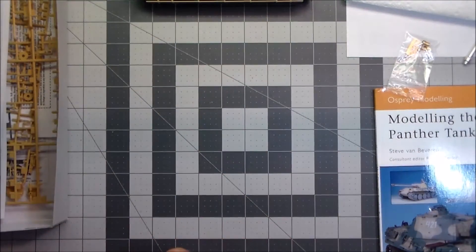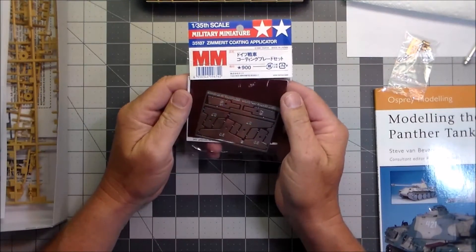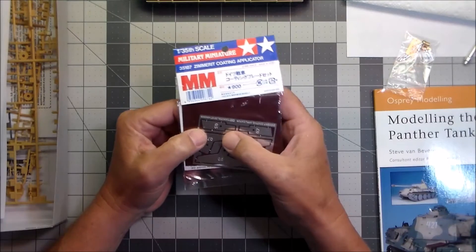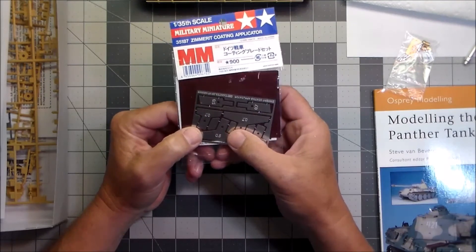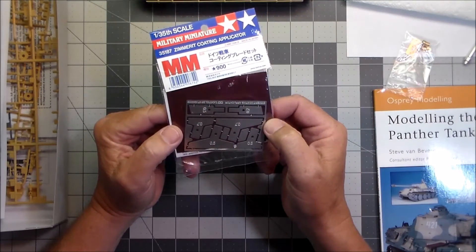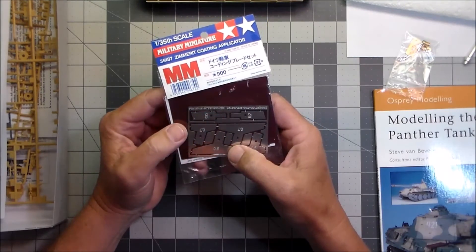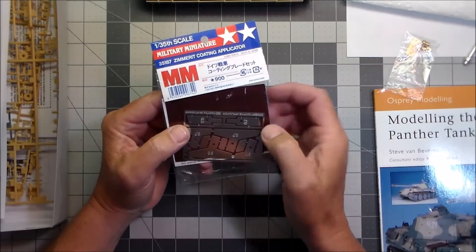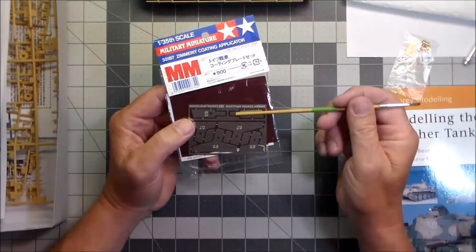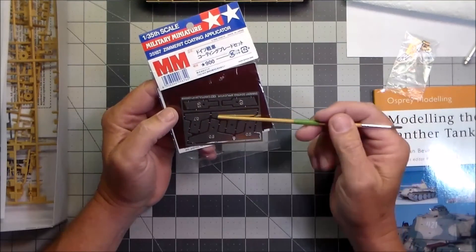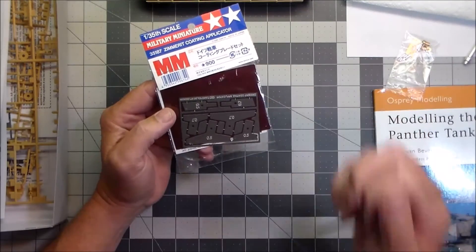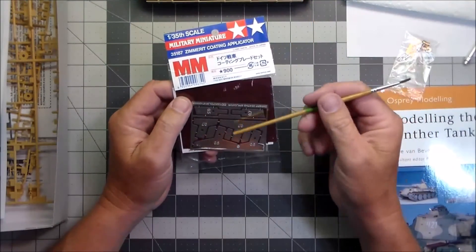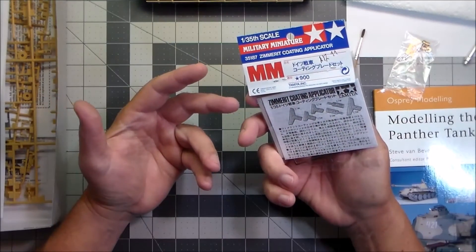And something else he tossed in that he didn't tell me he was going to send was this Tamiya Zimmerit coating applicator set. It's like a photo etch type thing, but the material is a lot thicker, and it's not as pliable as brass, so it'll keep its shape. It'll stay flat. It won't bend like brass will. And it's got .7 and .5 are the sizes, and different widths, like a little narrow applicator here, a little bit wider there, and then still wider there. So it'll really make it easy to apply Zimmerit. And since I plan on doing some more Panther tanks and other German vehicles that had Zimmerit, this really would come in handy. And again, this is just something he just tossed in because he felt like it.